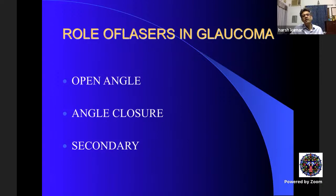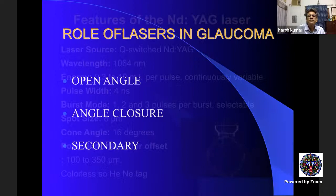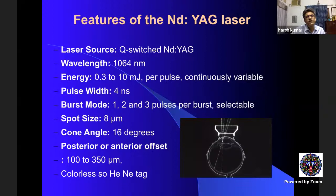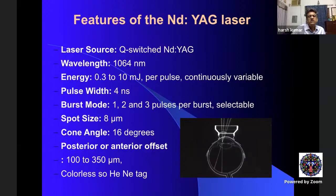Lasers are used in open-angle, angle-closure, and secondary glaucoma. The Q-switched ND:YAG operates at 1064 nanometers. A 532 nm Q-switched frequency-doubled laser is a coagulative laser — so 1064 nm is photo-disruptive and 532 nm is coagulative. The energy used is 0.3 to 10 millijoules per pulse, with multiple pulses available in burst mode.